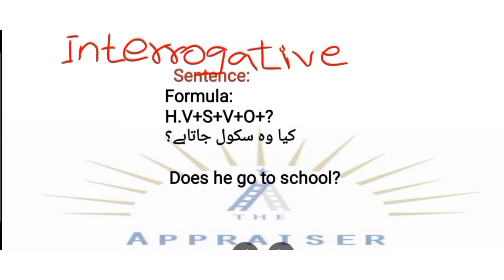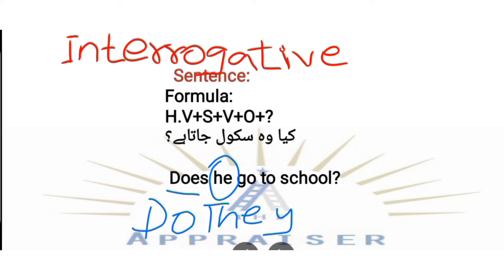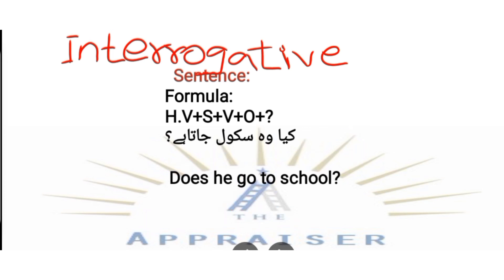Now let's discuss the interrogative sentence of Present Indefinite Tense. In an interrogative sentence, the helping verb comes at the start, then the subject, then the verb, then the object, and at the end we add a question mark. For example: 'Does he go to school?' We write 'does' at the start because the subject is singular. If the subject were 'they,' we would write 'do.' So: Does he go to school? — Helping Verb + Subject + Verb + Object + Question Mark.